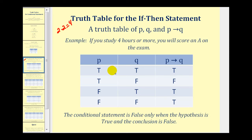For example, if both P and Q are true, then if P then Q is of course true. But if P is true and Q is false, that means you do study four or more hours but you don't score an A on the exam — that would be in direct violation of what the instructor promised, and therefore it would be false.